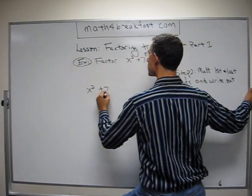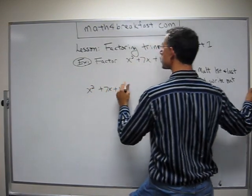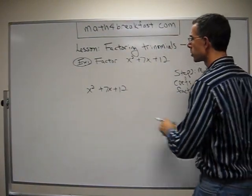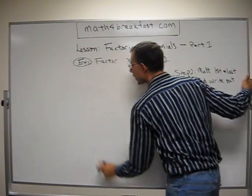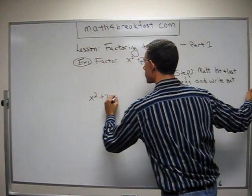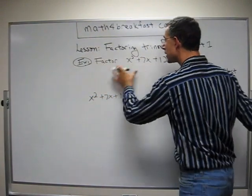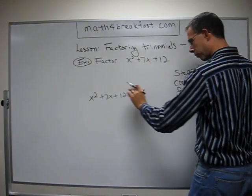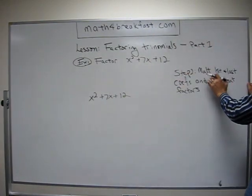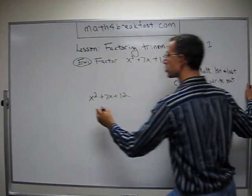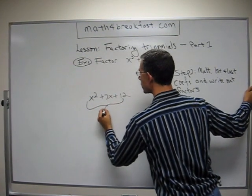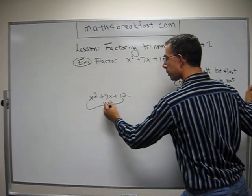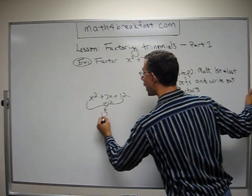x squared plus 7x plus 12. I'm going to leave some space here for critical notes. Step 2: multiply the first and last coefficients. Well, the first coefficient is a 1 and the last one is a 12. So I have 1 times 12, and when I multiply those together I get 12.